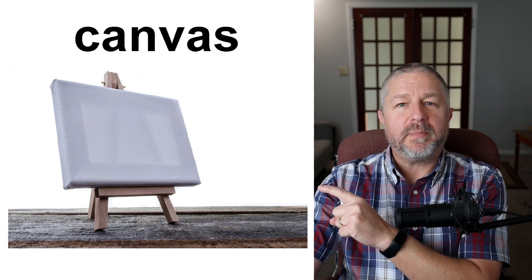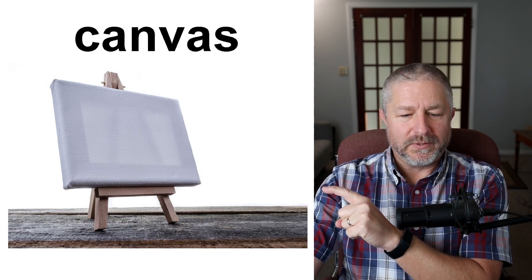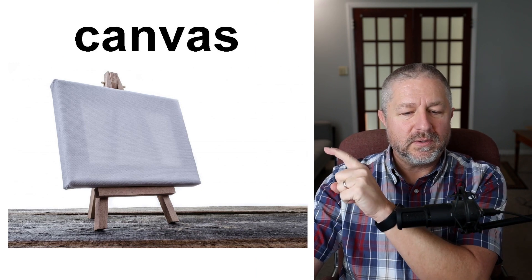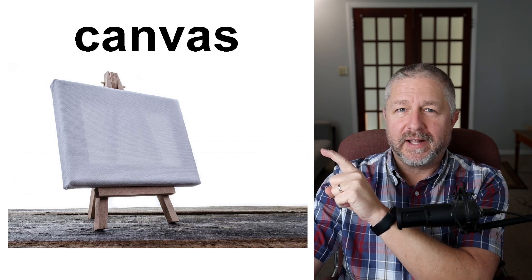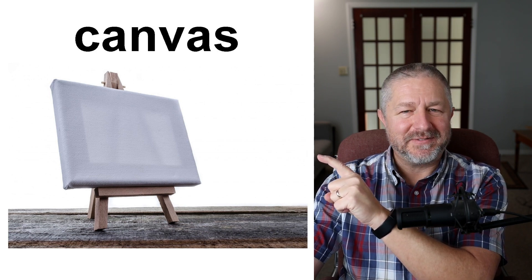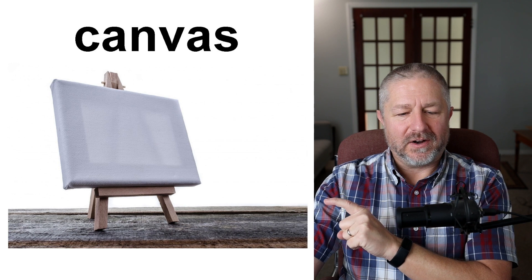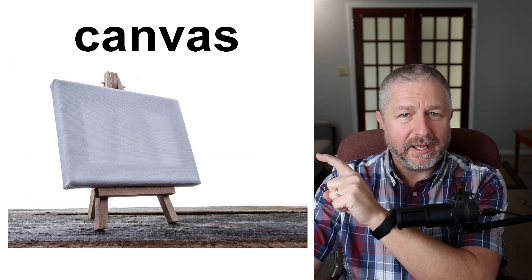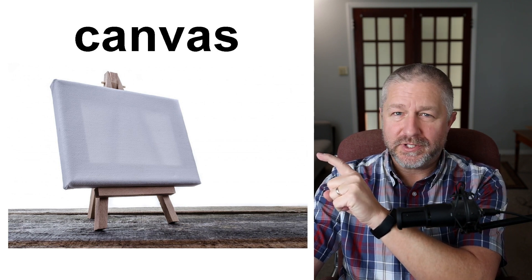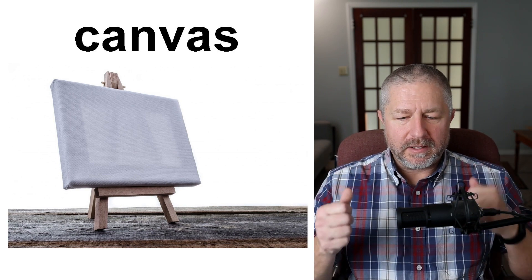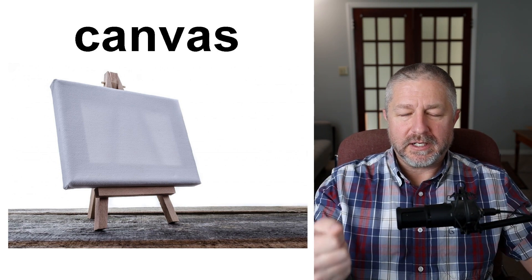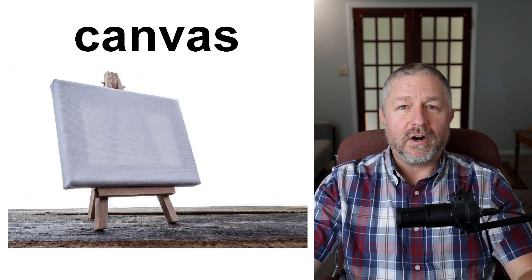A painter will often paint on a canvas. This white flat material is called canvas, and it is sitting on an easel. The artist has a blank canvas — nothing on it yet. They have attached it to a wooden frame, put it on an easel, and now they are ready to paint.